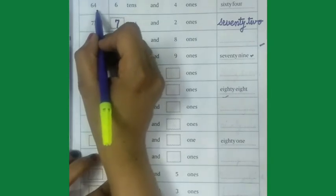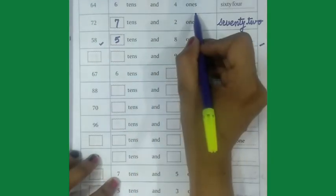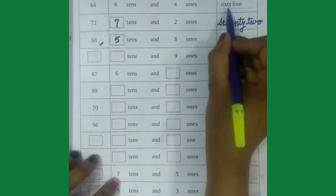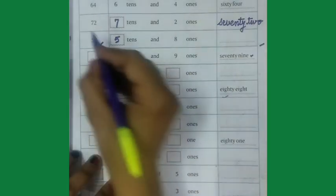First one is 64, 6 tens and 4 ones. We will write number names also, S-I-X-T-Y-60, F-O-U-R-4.